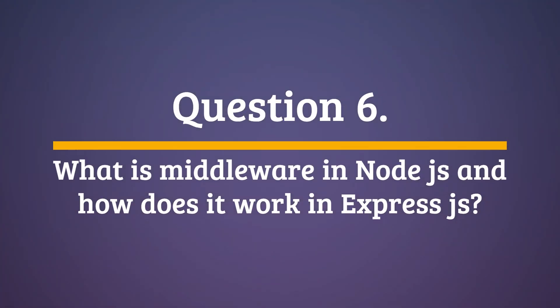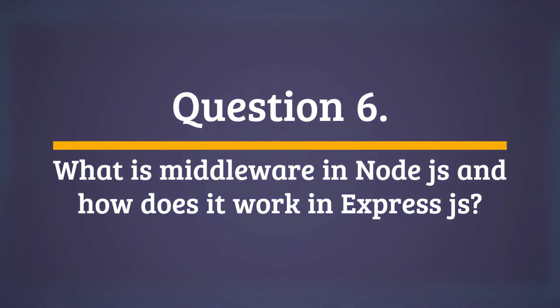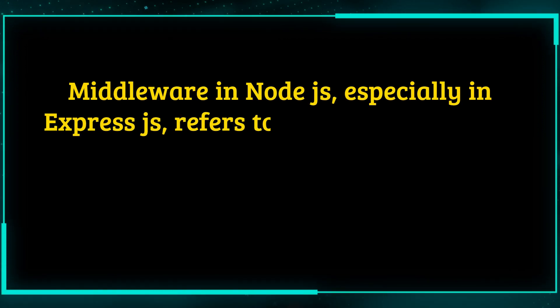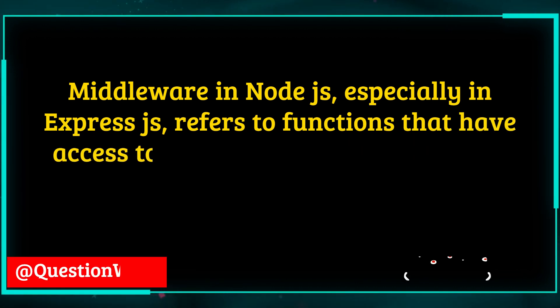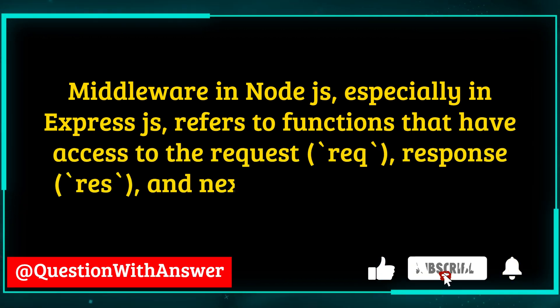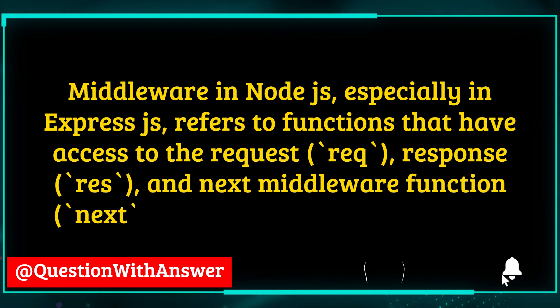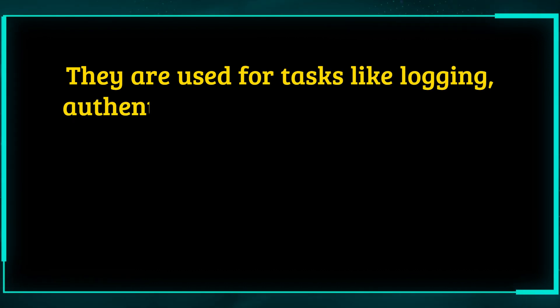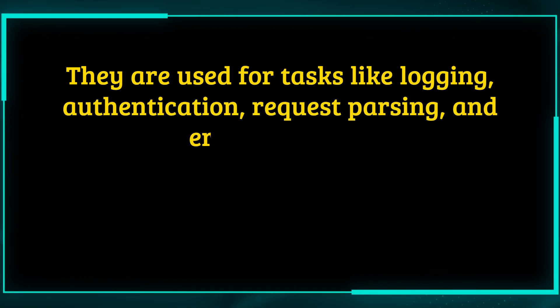Question 6. What is middleware in Node.js and how does it work in Express.js? Answer. Middleware in Node.js, especially in Express.js, refers to functions that have access to the request (req), response (res), and next middleware function (next) in the request-response cycle. They are used for tasks like logging, authentication, request parsing, and error handling.